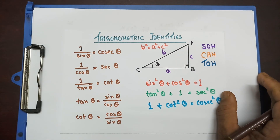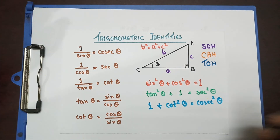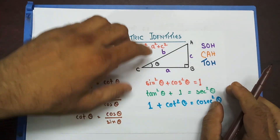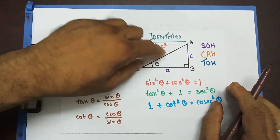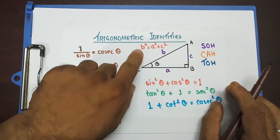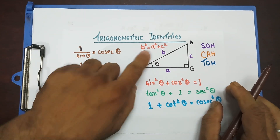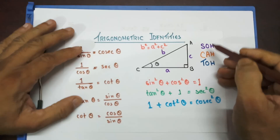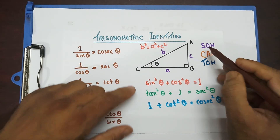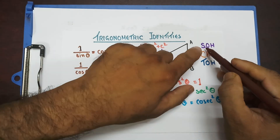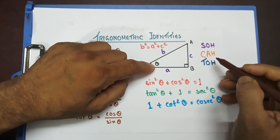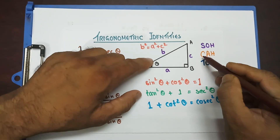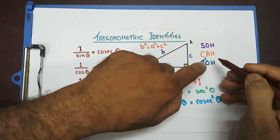In one of my last videos, I showed you how to get all these ratios from a right-angle triangle. I covered Pythagoras' Theorem — B squared, hypotenuse squared equal to the sum of the squares of the other two sides — and SOHCAHTOA, meaning how we get sine theta, one angle, expressed as the ratio of two sides of the triangle, and cosine theta and tan theta.